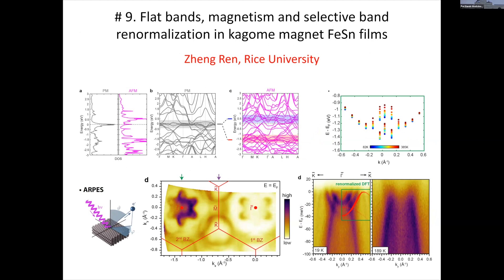This is done by performing a wide-range temperature-dependence measurement. Furthermore, I'm going to show how we identify a spin- and orbital-dependent band renormalization that resembles orbital-selective correlation effects in iron-based superconductors.